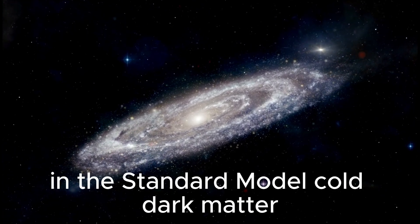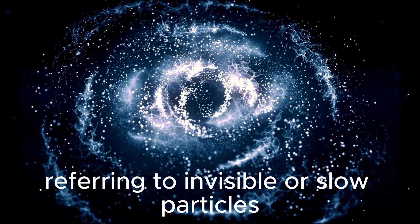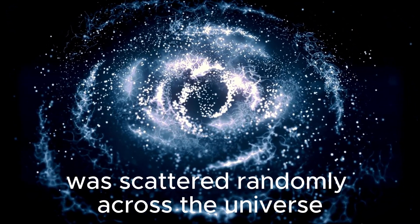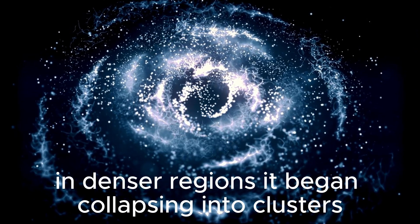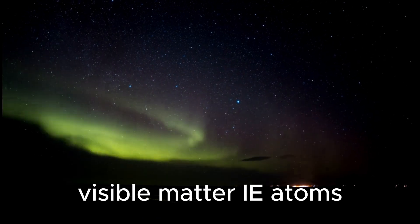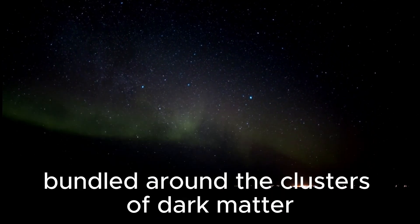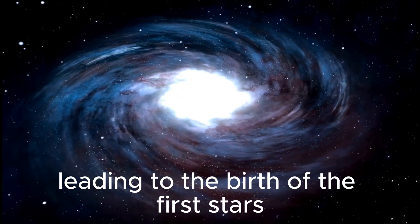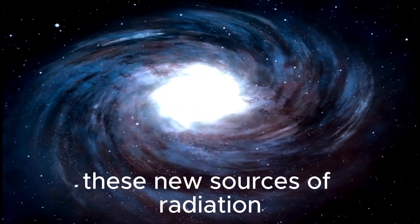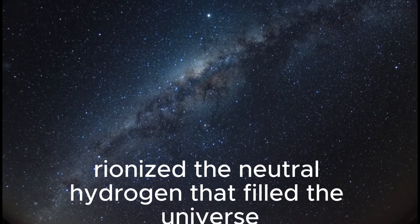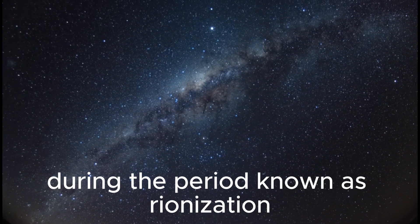In the standard model, cold dark matter, referring to invisible or slow particles, was scattered randomly across the universe. In denser regions, it began collapsing into clusters. Visible matter, i.e. atoms, bundled around the clusters of dark matter as they cooled and eventually densified, leading to the birth of the first stars. These new sources of radiation re-ionized the neutral hydrogen that filled the universe during the period known as re-ionization.